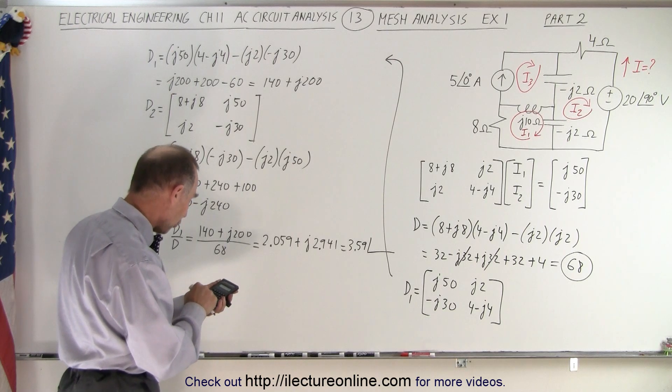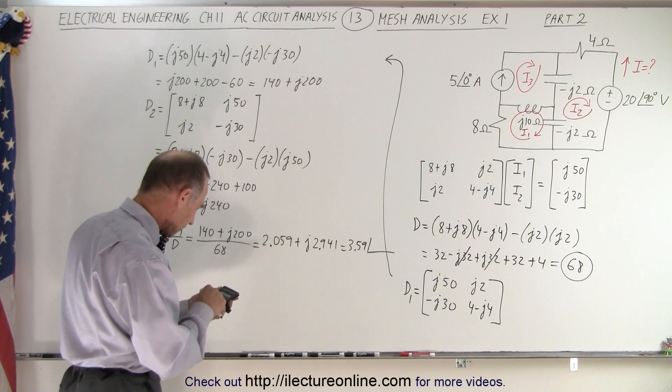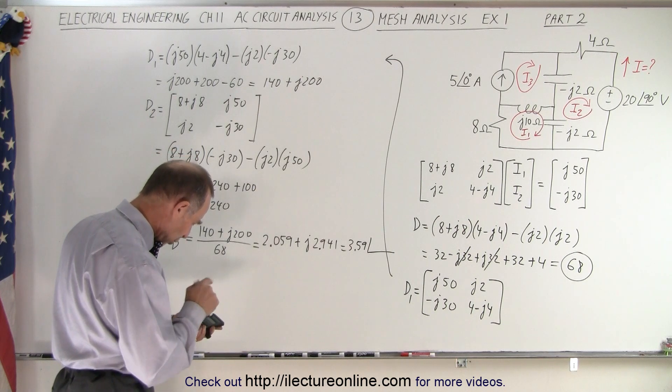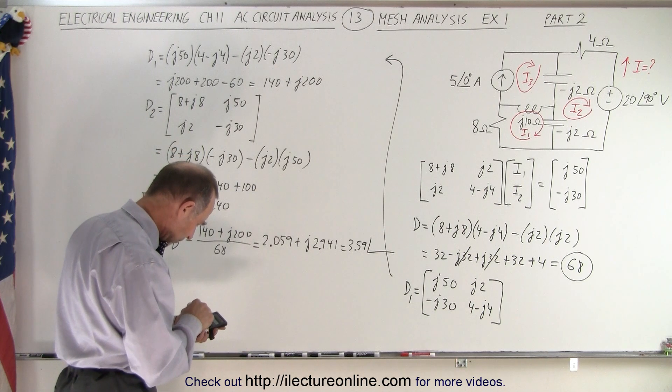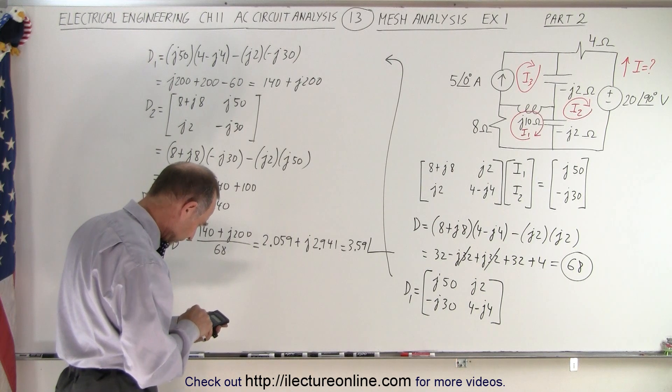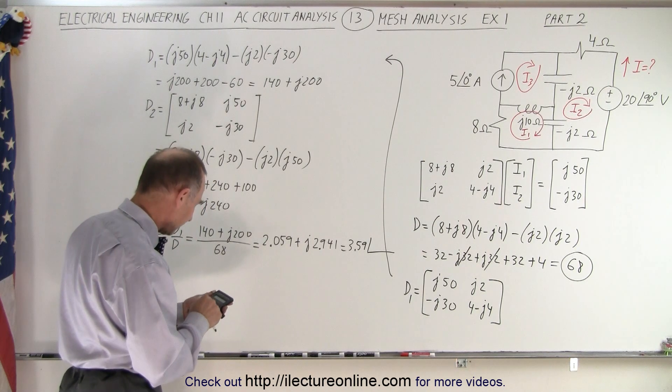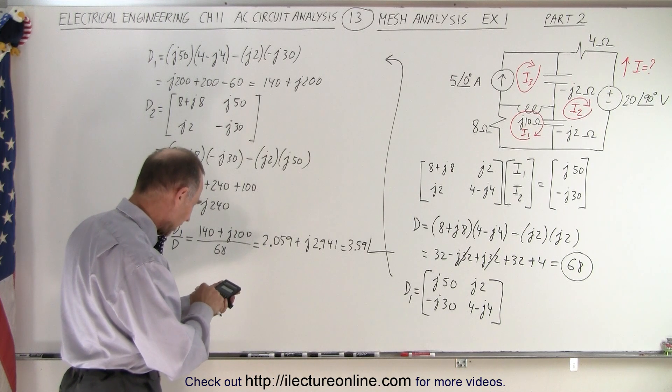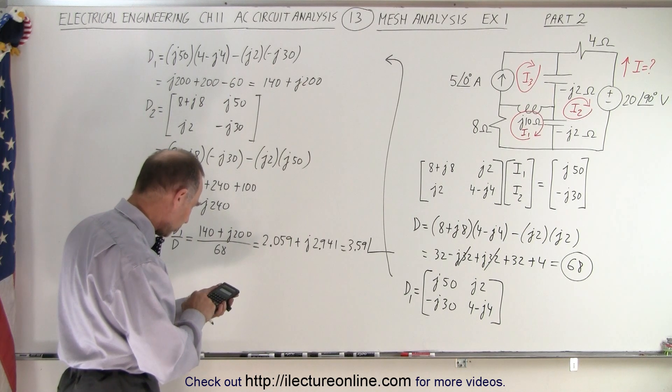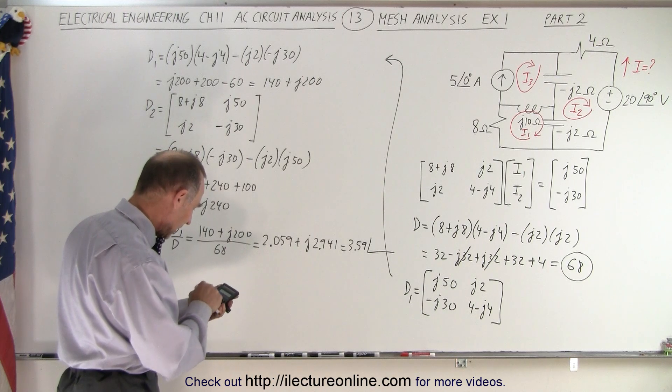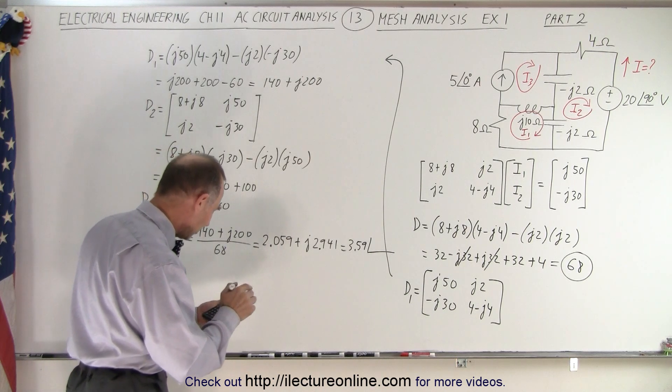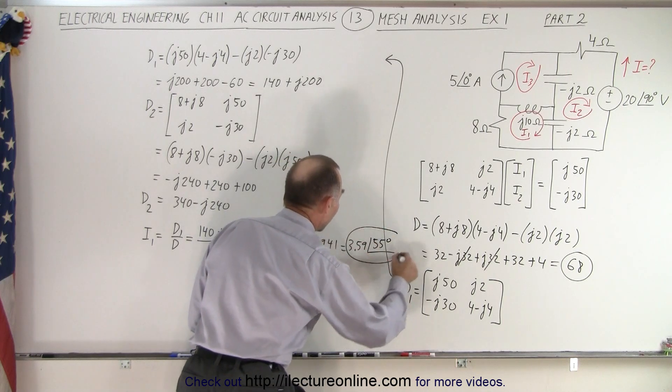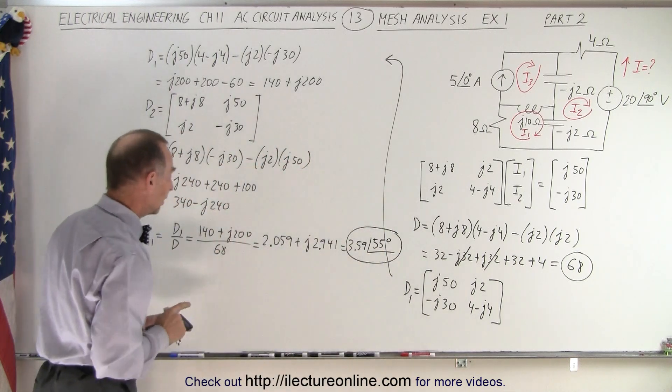So this would be equal to 3.59 with a phase angle of 2.941 divided by 2.059. Take the inverse tangent of that, and a phase angle, oh, I don't have it in the right mode. So let's go mode 4. Mode 4. Let's try that again. So now we should be in degrees. So we have 2.941 divided by 2.059, and take the inverse tangent of that, gives me 55 degrees. So this is I1, current I1 in mesh 1.